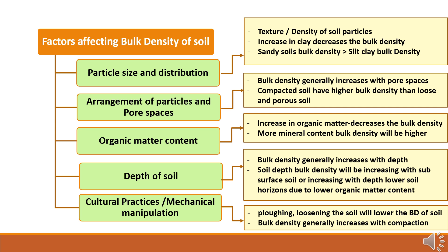Regarding particle size and distribution, the texture and density of soil particles impacts bulk density. An increase in clay decreases the bulk density, and sandy soils have higher bulk density compared to silt and clay soils because of less pore space. Where arrangement of particles and pore spaces are related, bulk density generally increases with soil compaction, and compacted soils have higher bulk density than loose and porous soils.